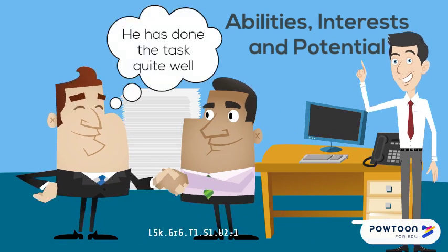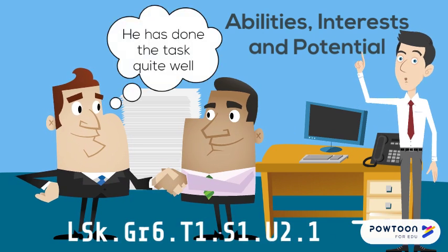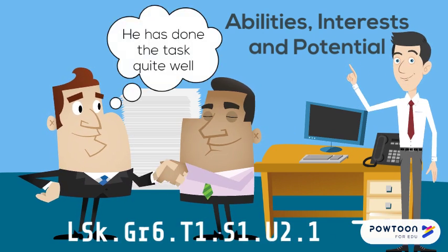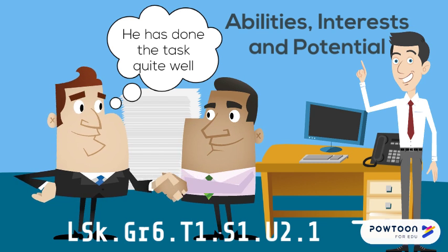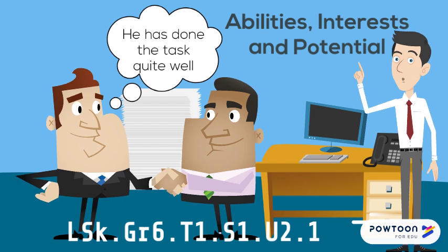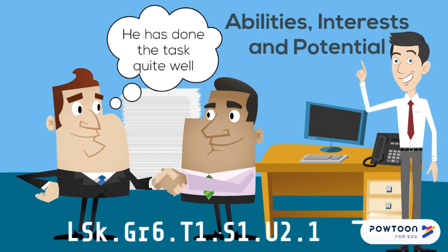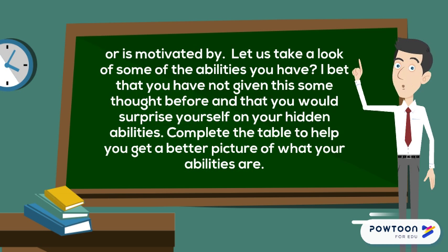An ability is something the student is good at or does well. This might be a talent or skill. We all have something that we can do well. An interest, on the other hand, is something that a student is intrigued by or is motivated by.